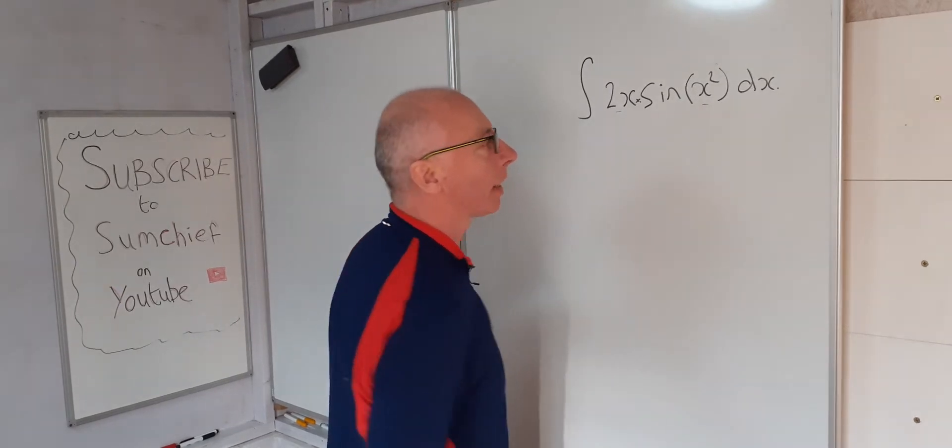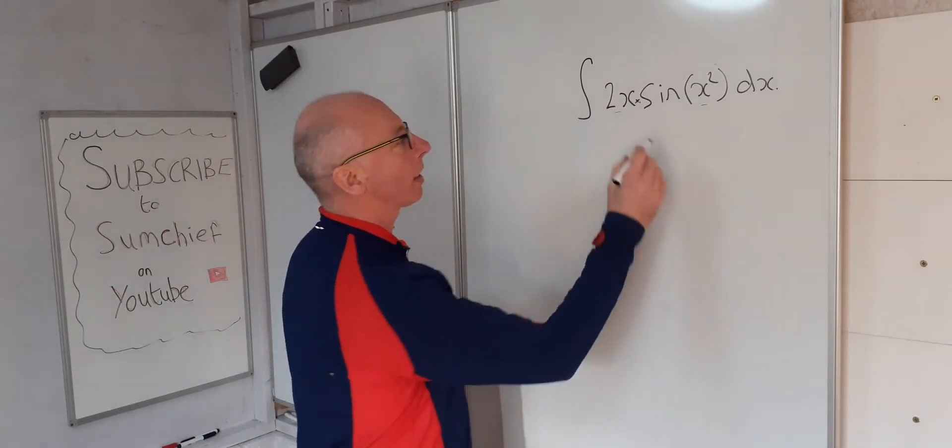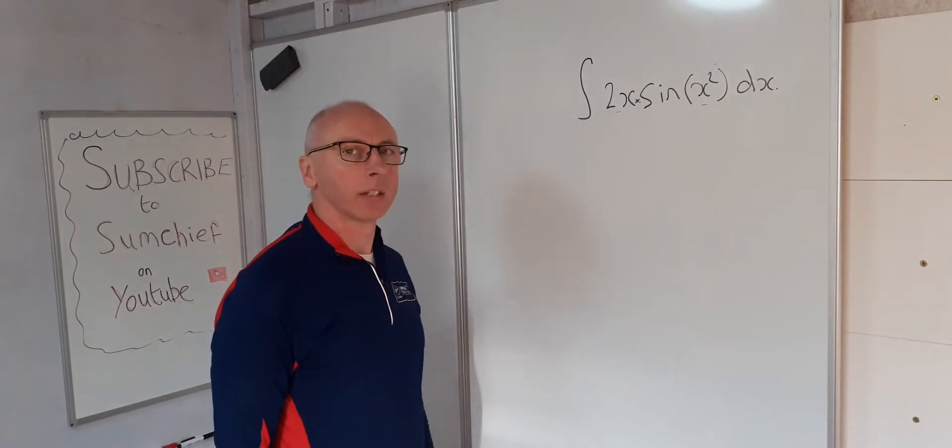So we have a 2x here and an x squared here. What I can see is that 2x is the derivative of x squared.